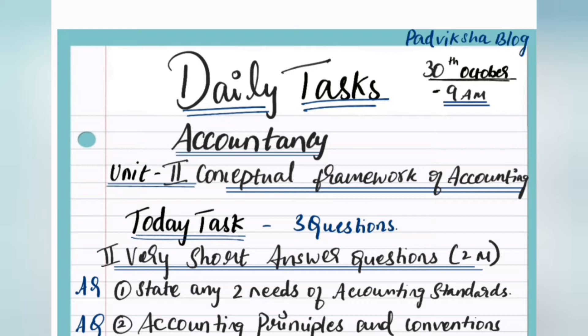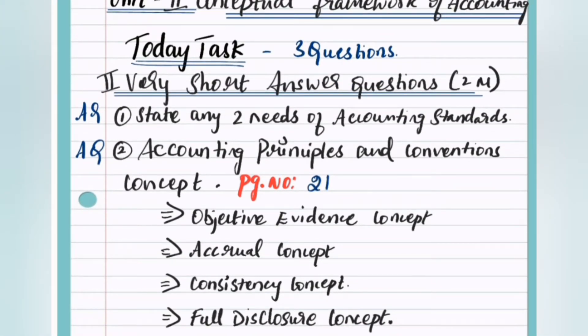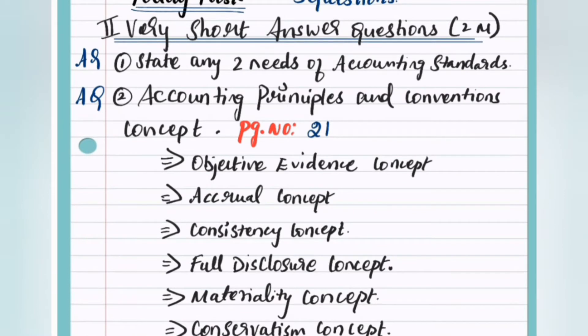Today's task is very short answer questions. You need to cover three questions. The first one is an additional question: State any two needs of accounting standards. Without these needs, you can finish the additional questions quite well.